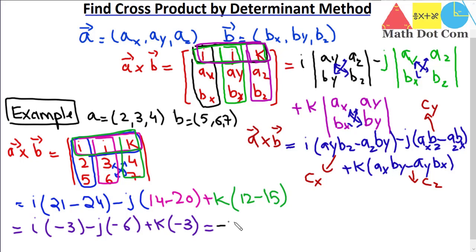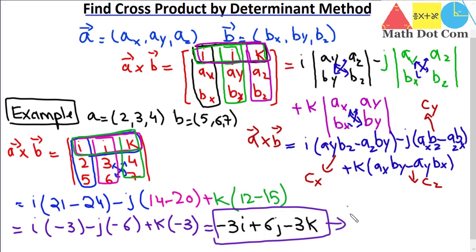So the result is −3i + 6j − 3k. This is the resultant vector we get by using the matrix determinant method. This is one of the methods for finding the resultant cross product vector by applying the determinant method. Thank you.